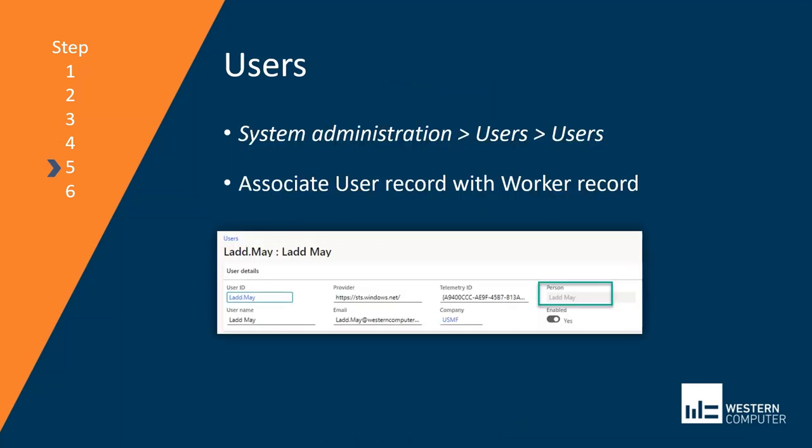The next step is probably already done. You just need to make sure that your users in system administration are associated with the worker record, or with the party record that was generated by the worker record. So the user record will have a person record associated with it.